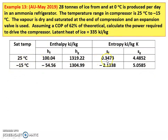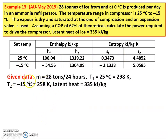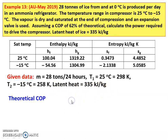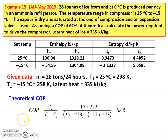Given data: mass of ice produced is 28 tons per 24 hours. Temperature T1, the higher temperature, is 25 degree Celsius which is 298 Kelvin. Lower temperature, the evaporator temperature, is minus 15 degrees Celsius which is 258 Kelvin. Latent heat of ice equals 335 kilojoules per kilogram. The theoretical COP equals T2 divided by T1 minus T2, where T2 is the evaporator temperature and T1 is the condenser temperature.